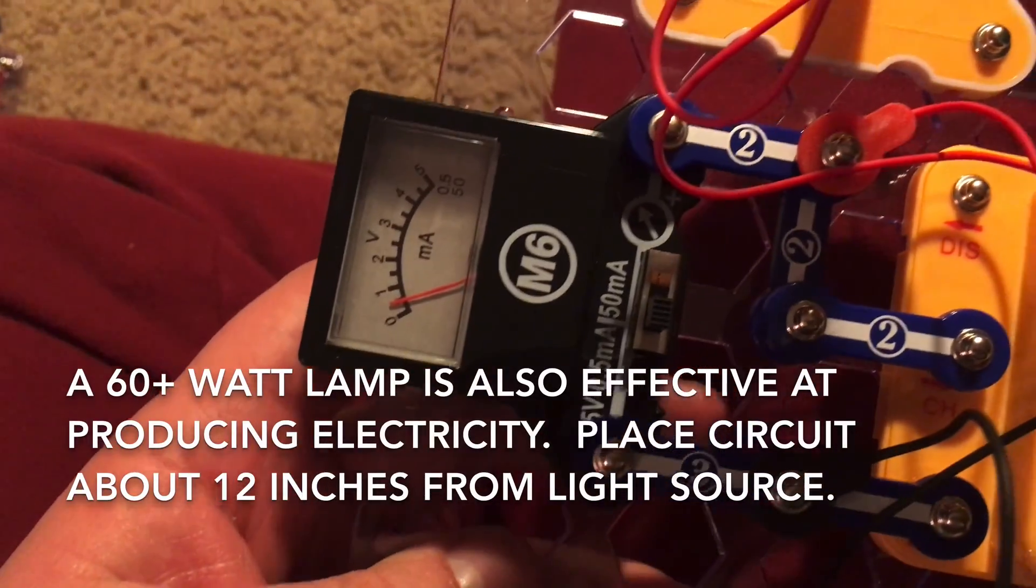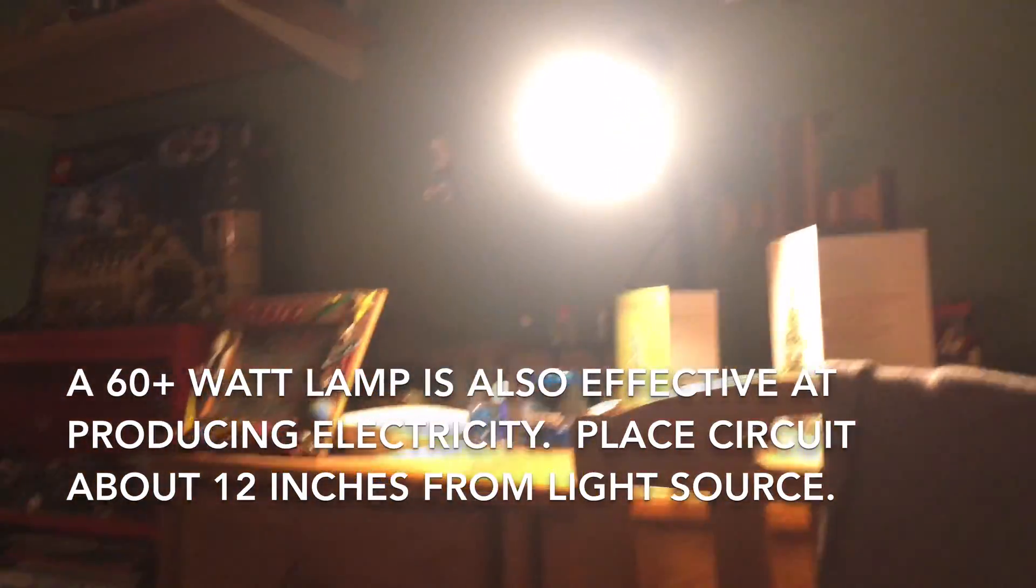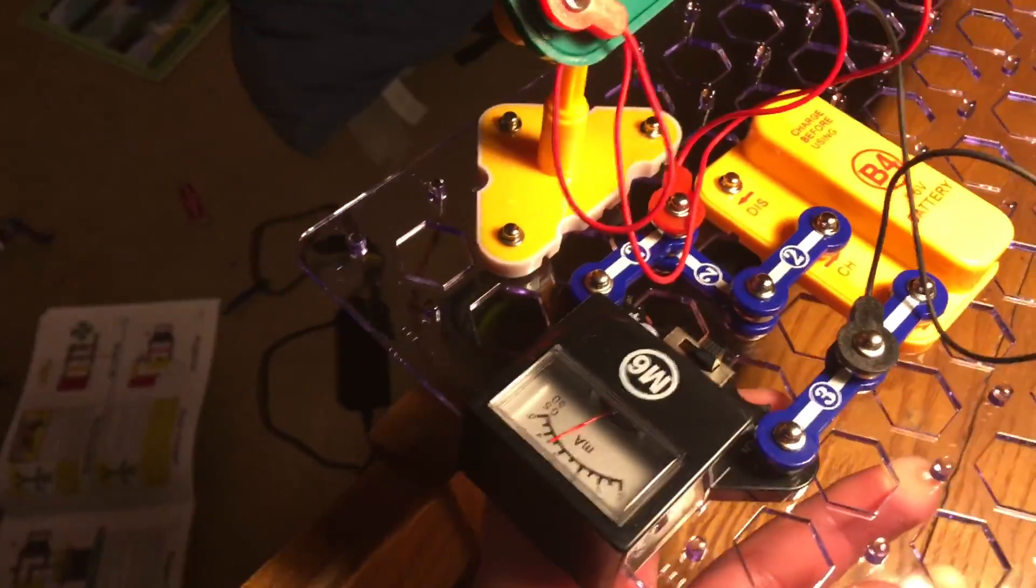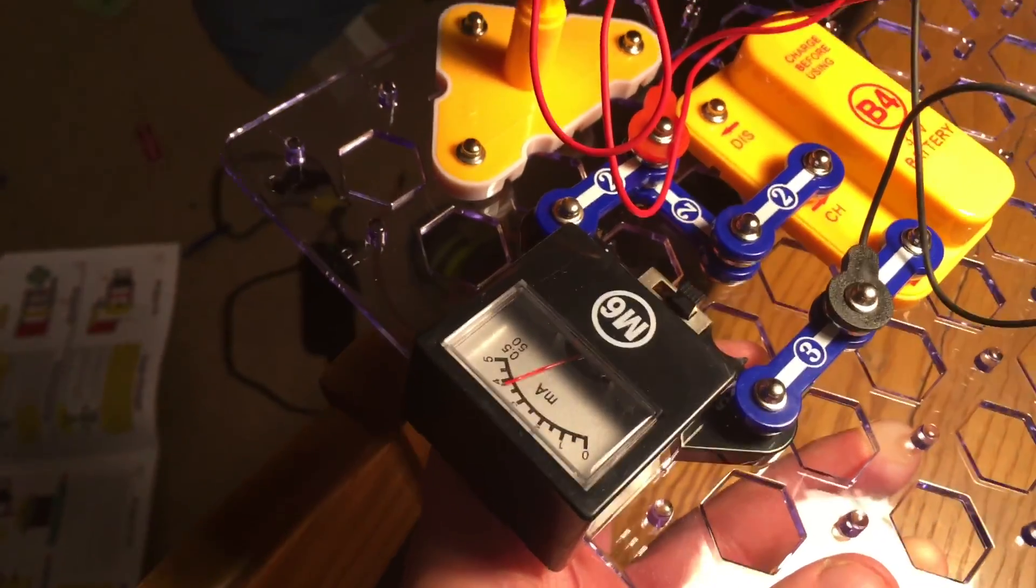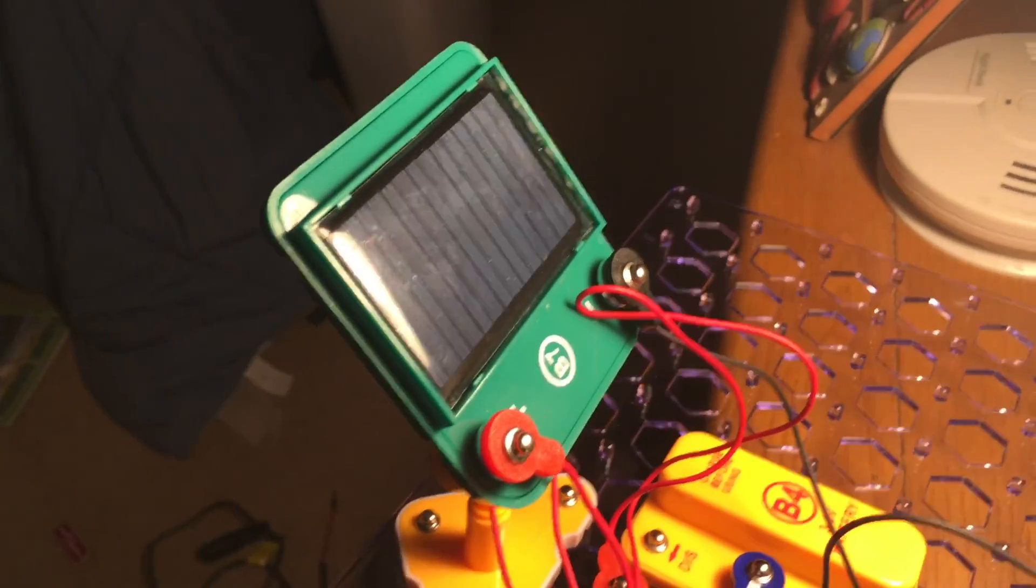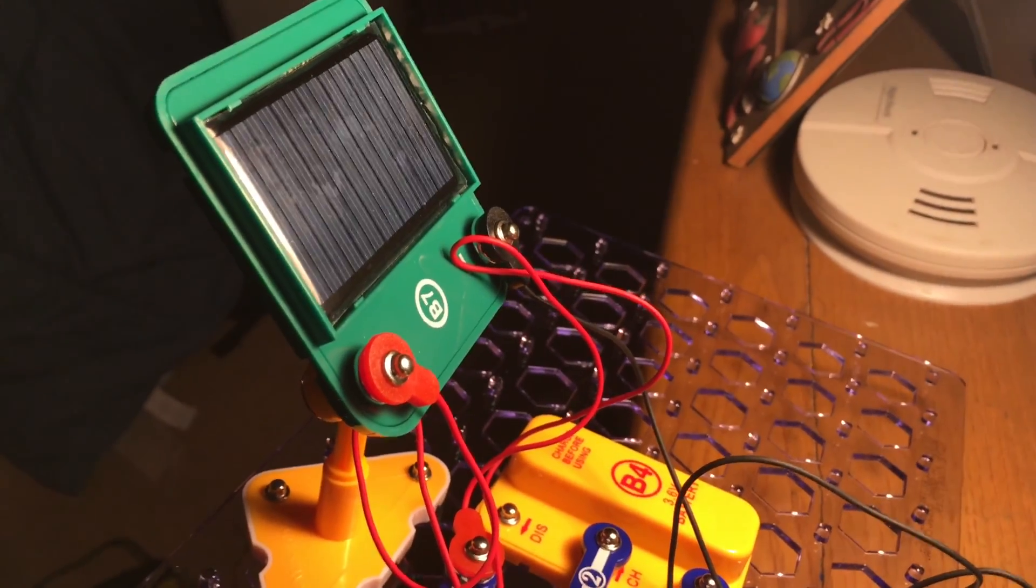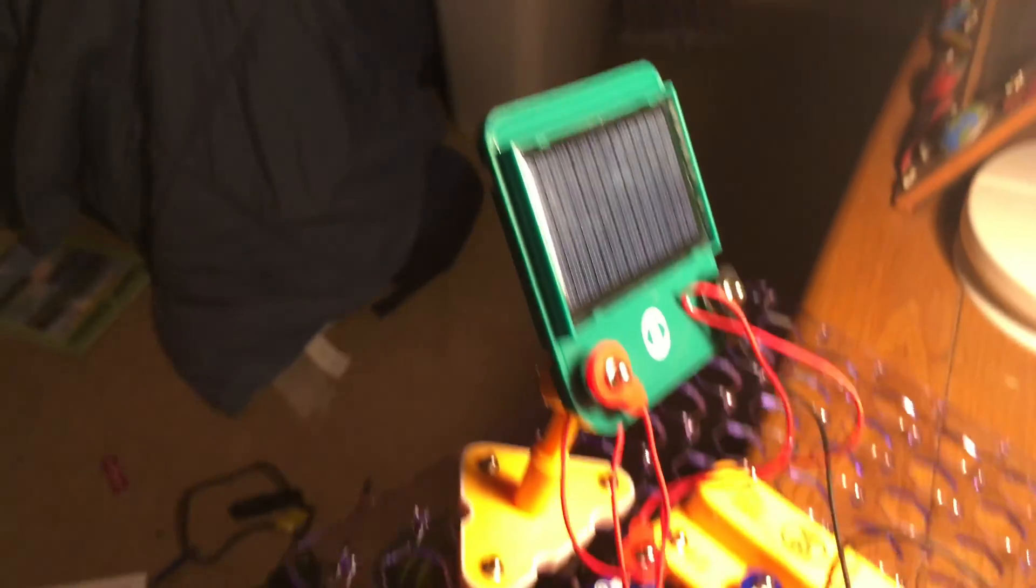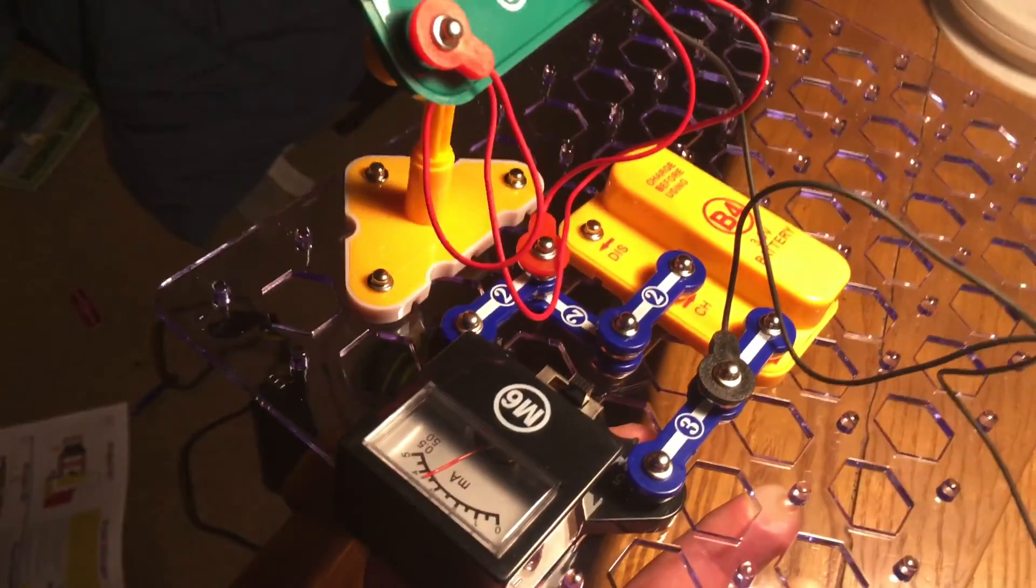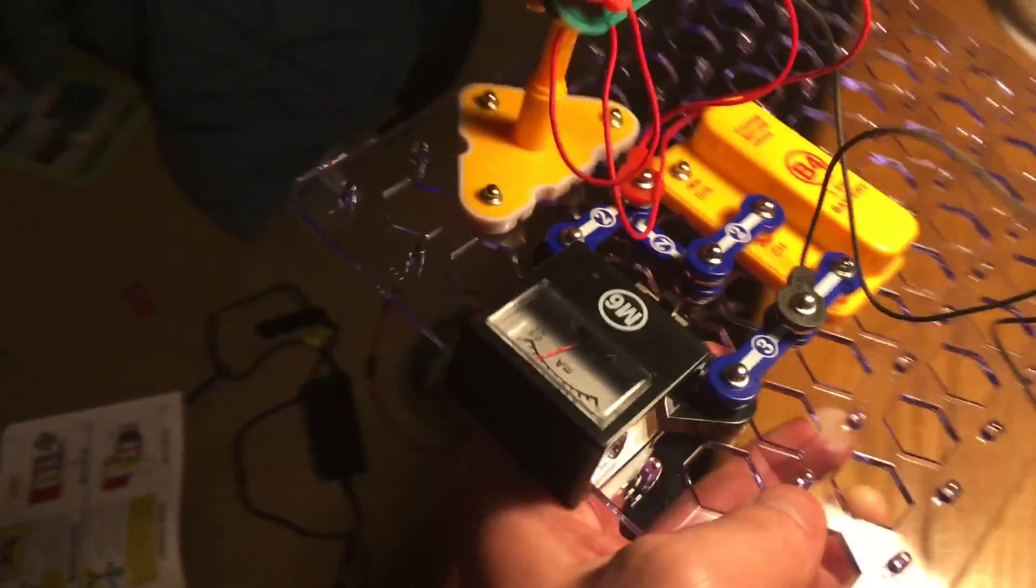Now the meter is very low but let's see if this desk lamp will do the trick. I am going to hold it about a foot away and it looks like the meter does increase. So that means that the solar cell is converting light into electricity. You can use natural sunlight but you can also use a light bulb that is at least 60 watts and make sure that the circuit is about a foot away from the light source. Now if I take the circuit away from the light...